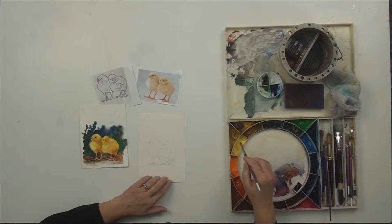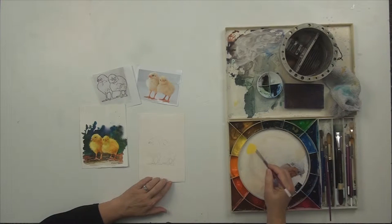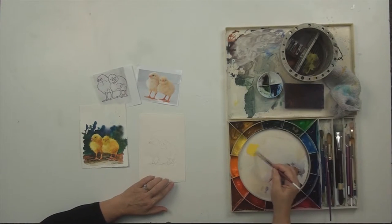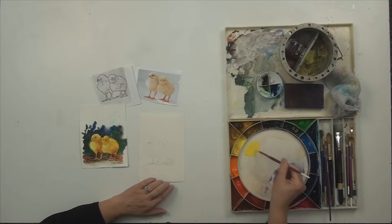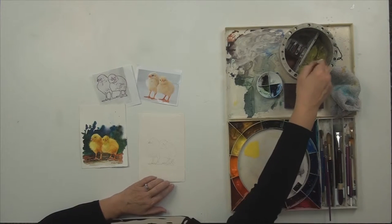The secret to painting soft edges is to do it while the paint is wet, so I'm going to mix up some yellow watercolor. This is lemon yellow. I'm going to add quite a bit of water to it so that it's quite wet.